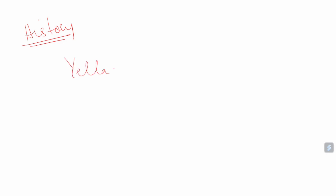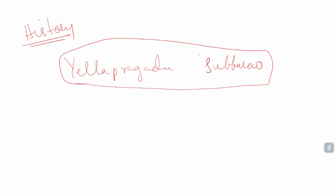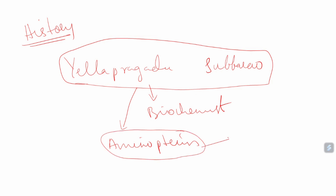If you see the history — have you heard about Ella Pragada Subbarao? He is a Telugu person from Andhra Pradesh, a very famous biochemist and scientist. Initially, he identified one compound called aminopterin, which is very similar to folic acid and very similar to methotrexate. He developed this molecule and understood that aminopterin has antineoplastic activity and studied that it could be used for leukemias.